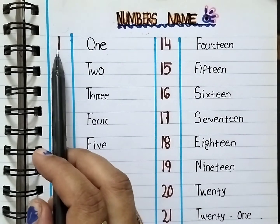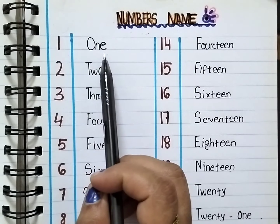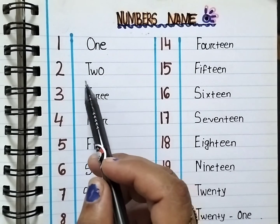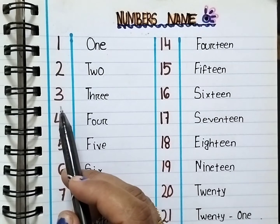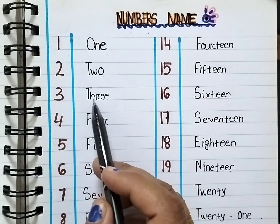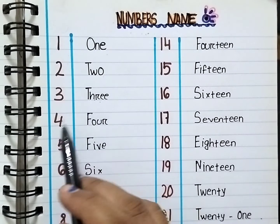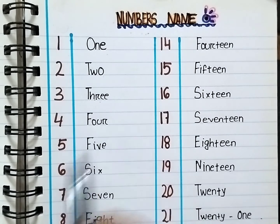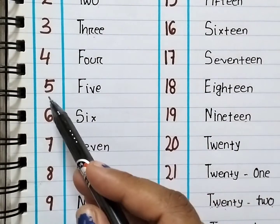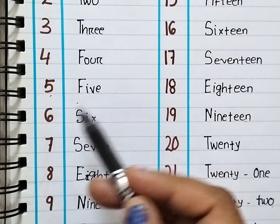1. O-N-E 1. 2. T-W-O 2. 3. T-H-R-E-E 3. 4. F-O-U-R 4. 5. F-I-V-E 5.